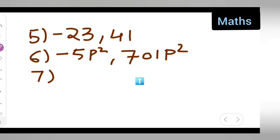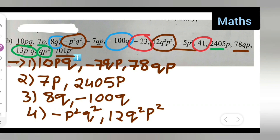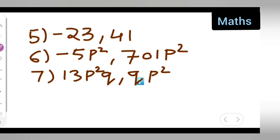The seventh group — which is the term left with 13p²q and qp²? So write down: 13p²q, comma, qp². I hope you have understood exercise 12.1, question number 7. Thanks for watching — if you have any doubts or queries you can comment below. Don't forget to like, share, and subscribe.